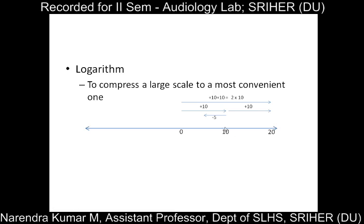If moving back by 5 from 20, then 20 minus 5 leads to 15. So the distances between 0 to 5, 5 to 10, 10 to 15, 15 to 20 are all equal — that is the property of a linear scale. Moving back by 10 units is minus 10, and then minus 20. The linear scale works on the principle of simple addition and subtraction.